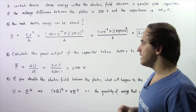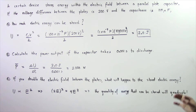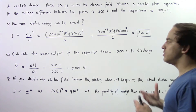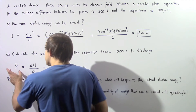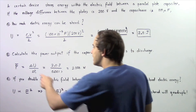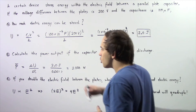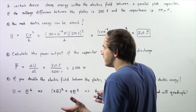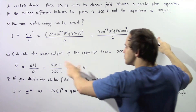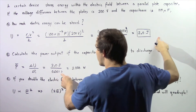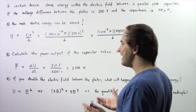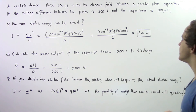Now let's move on to part B. Calculate the power output if the capacitor takes 1 millisecond, or 0.001 seconds, to discharge. Recall that the average power output is equal to the change in electric energy divided by the change in time. The change in electric energy is 2 joules minus zero, so it's simply 2 joules divided by 0.001 seconds, which equals 2,000 watts. So 2,000 joules per second is the power output of this capacitor.